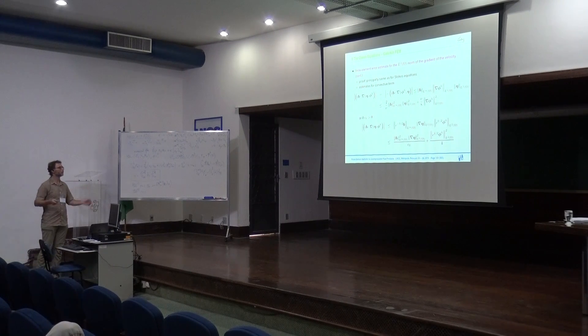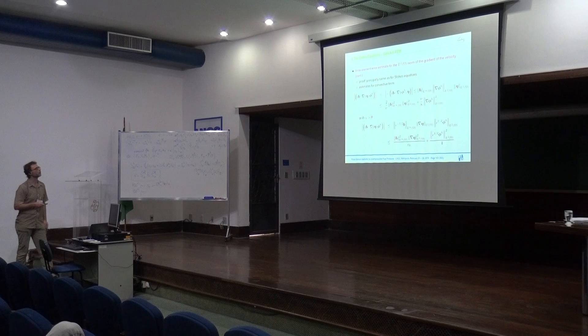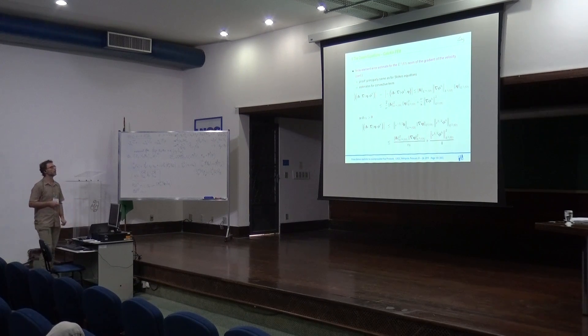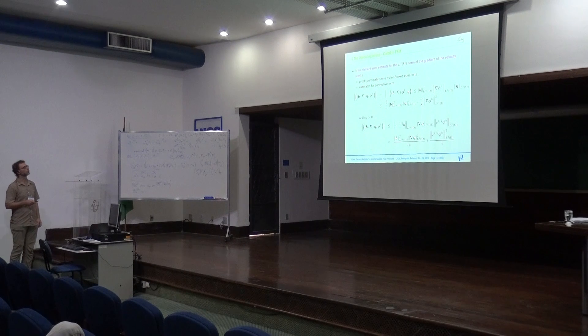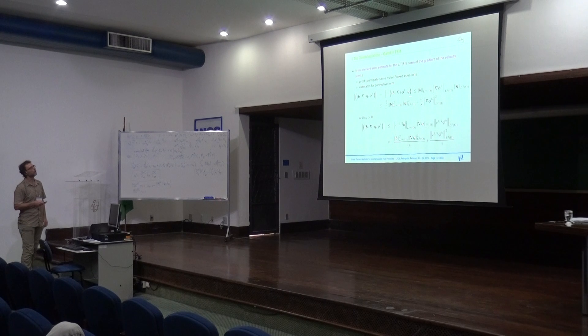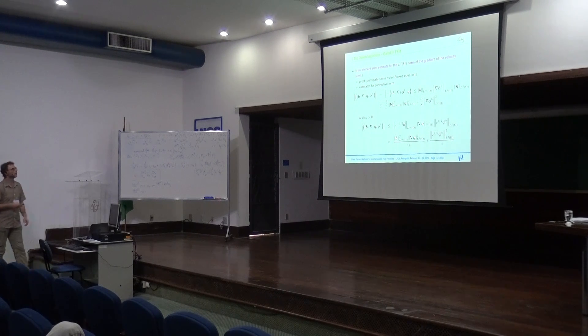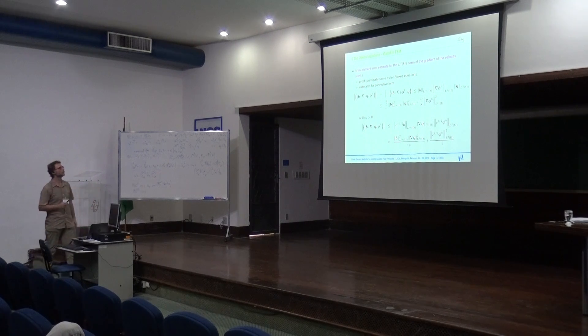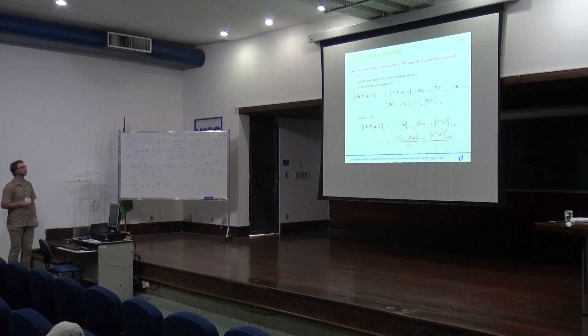And so one just, by Lax-Milgram, one has to show the coercivity property of the bilinear form. That means one just, in terms, one studies the bilinear form with the same argument, V, V. And then, this convective term vanishes. Now, this term is larger or equal than 0 by assumptions on C. So that means it can be bounded by the norm in the space of V squared, and we have the factor of nu. But it means existence and uniqueness. So, in order to perform this proof, we really need that V is divergence-free. And then we have existence and uniqueness of a solution by Lax-Milgram.